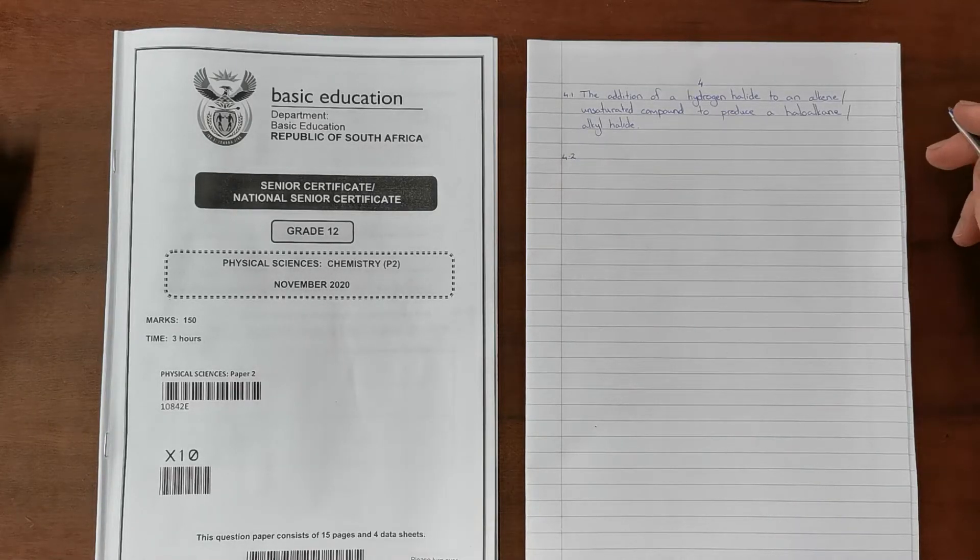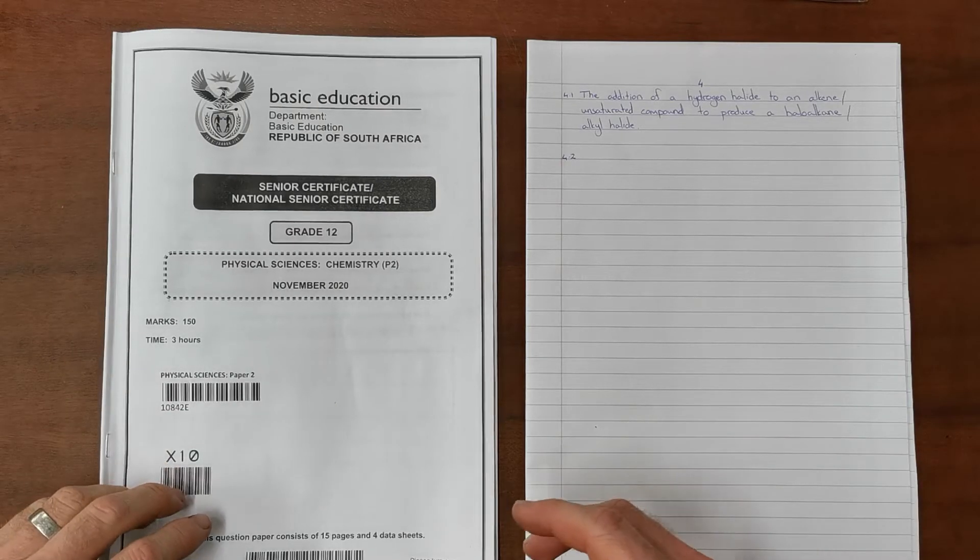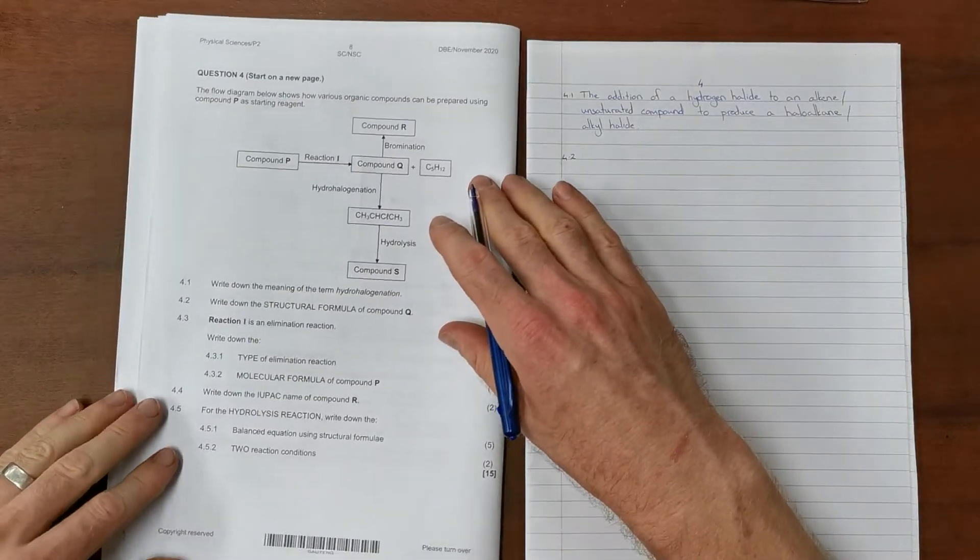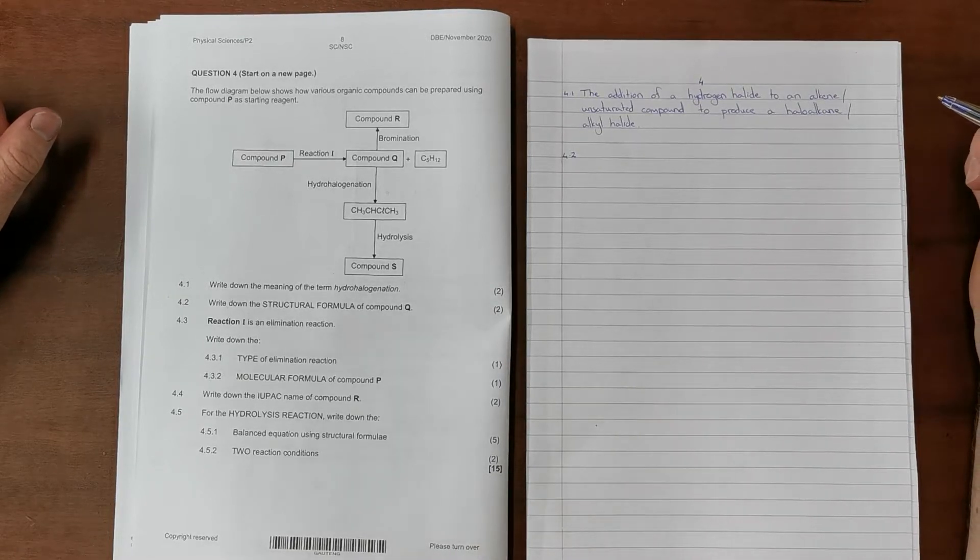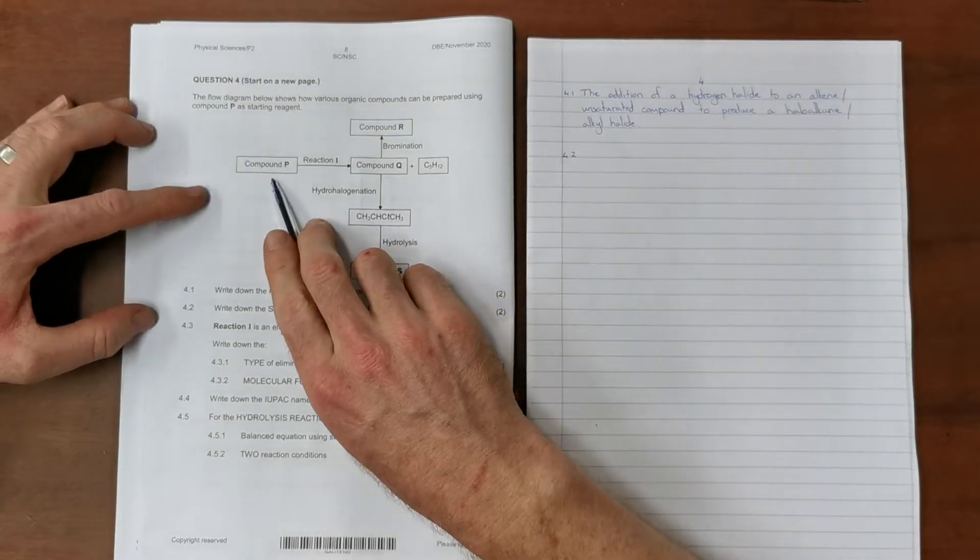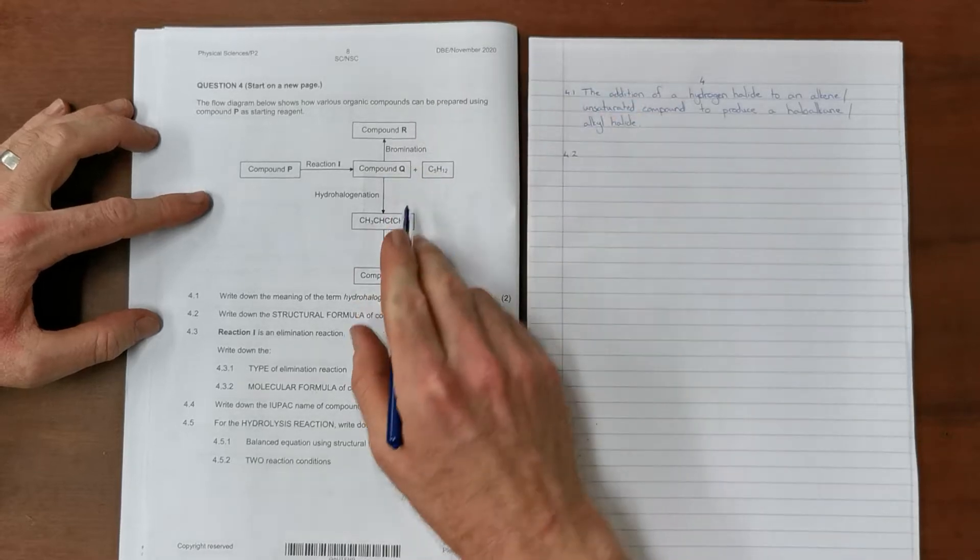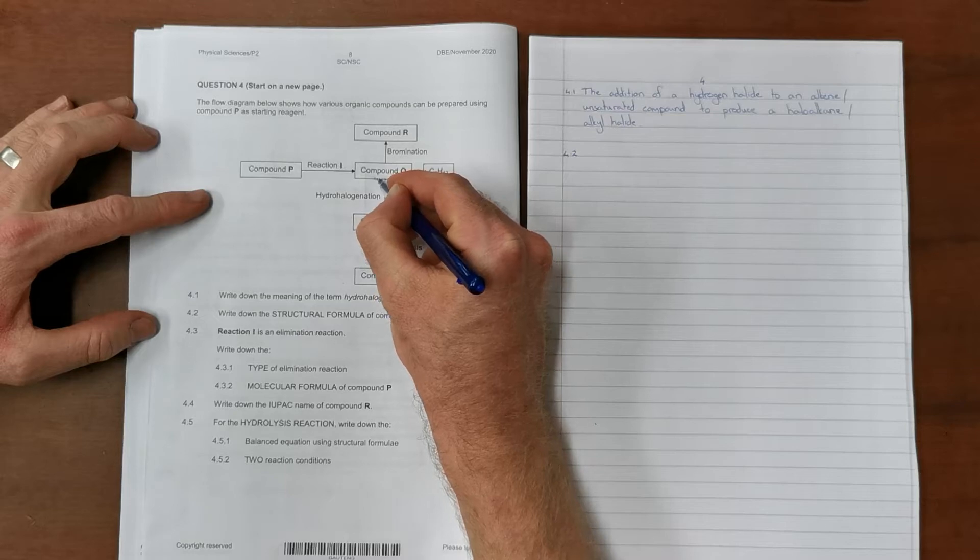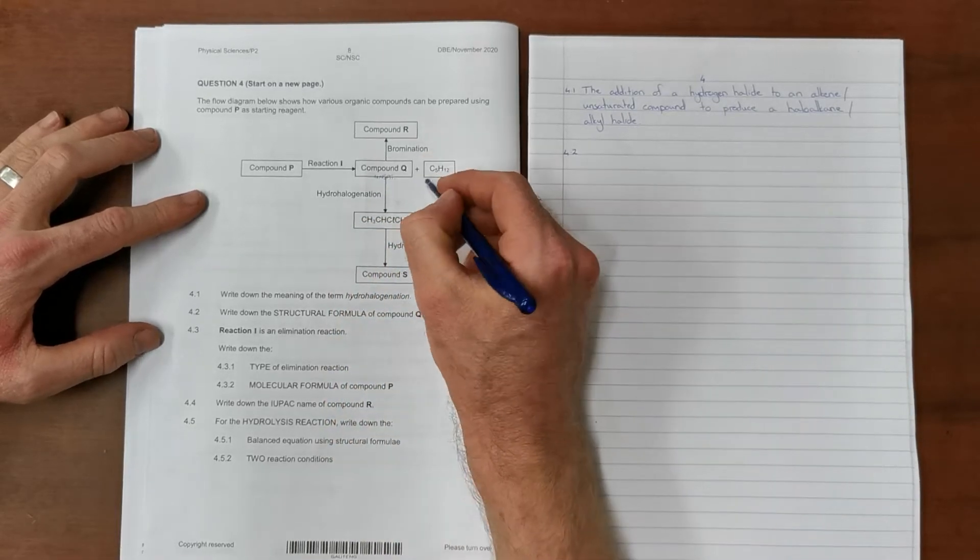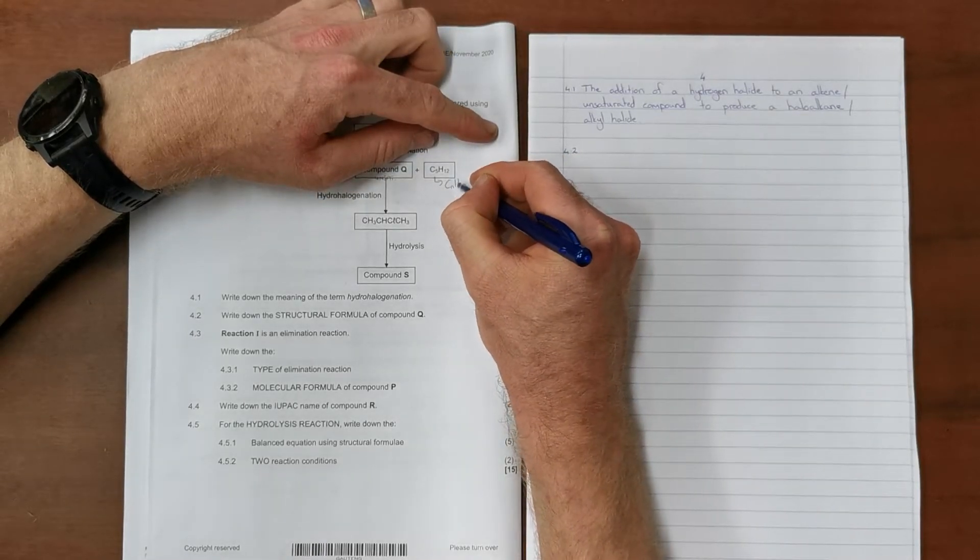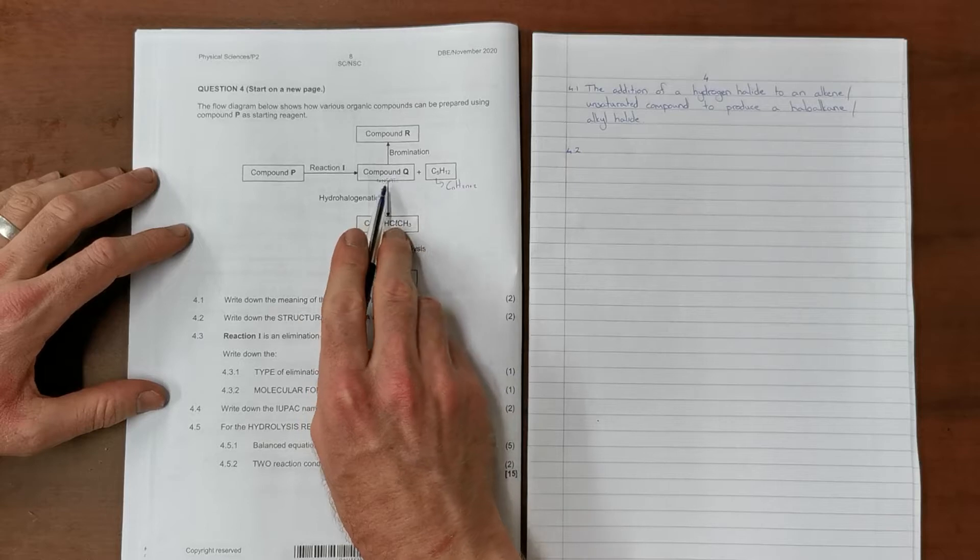I'm working through section 3 of organic chemistry in the first version of the 2020 NSC chemistry paper. Section 3 of organic chemistry is always tested in question 4. The flow diagram below shows how various organic compounds can be prepared using compound P as the starting reagent. Compound P undergoes reaction 1 to form a compound that can undergo either bromination or hydrohalogenation, which suggests compound Q is an unsaturated compound. That suggests this is a form of cracking reaction that produces an alkene and an alkane.